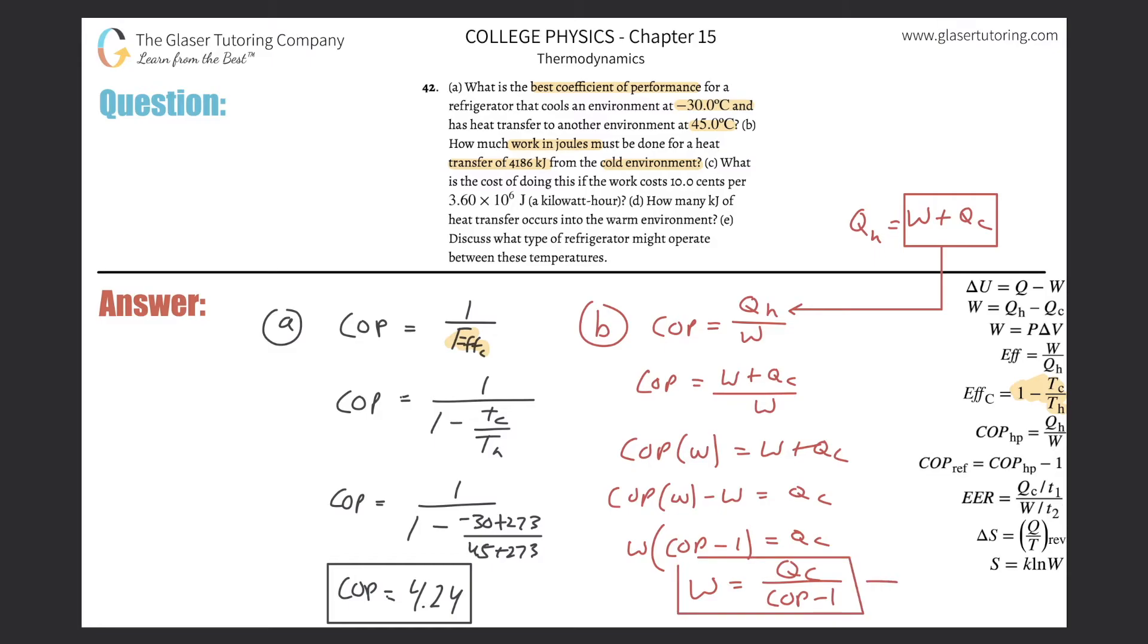All we now need to do is plug it in. So Q sub C was the value that they gave us, the 4184 divided by coefficient of performance, which is 4.24, and then subtract one from it. Now remember, this value is in kilojoules, which is okay because it's unit less on the bottom. So whatever, if I put kilojoules in, I'm going to get kilojoules out. So we'll take 4184, divide it now by 4.24 minus one. And we get a value of about, I'll put it on the top. That for letter B here, the work was about 1290 kilojoules. So that takes care of that.